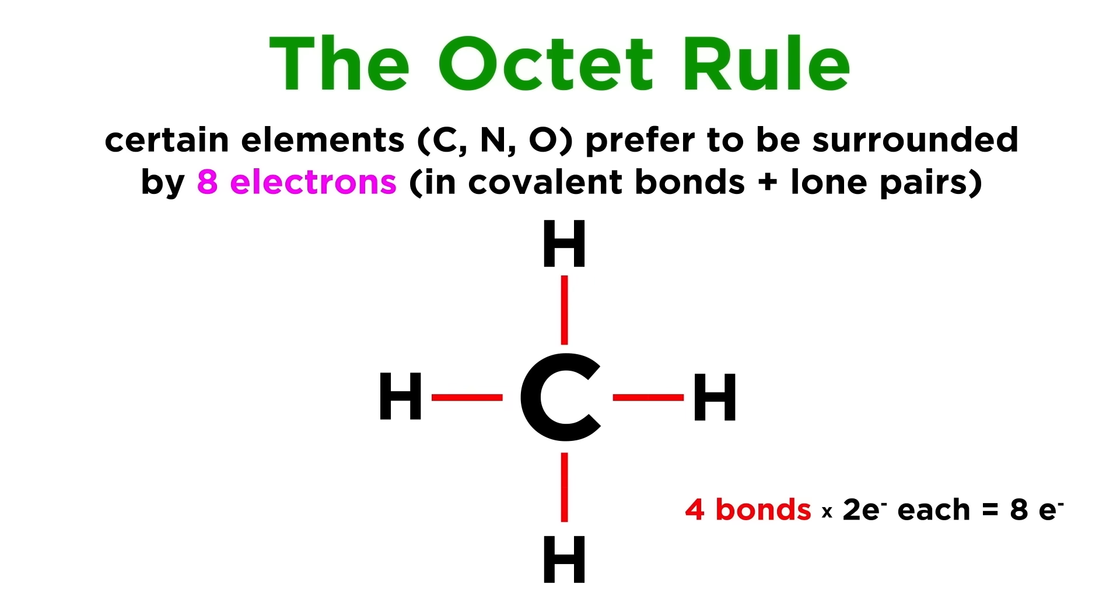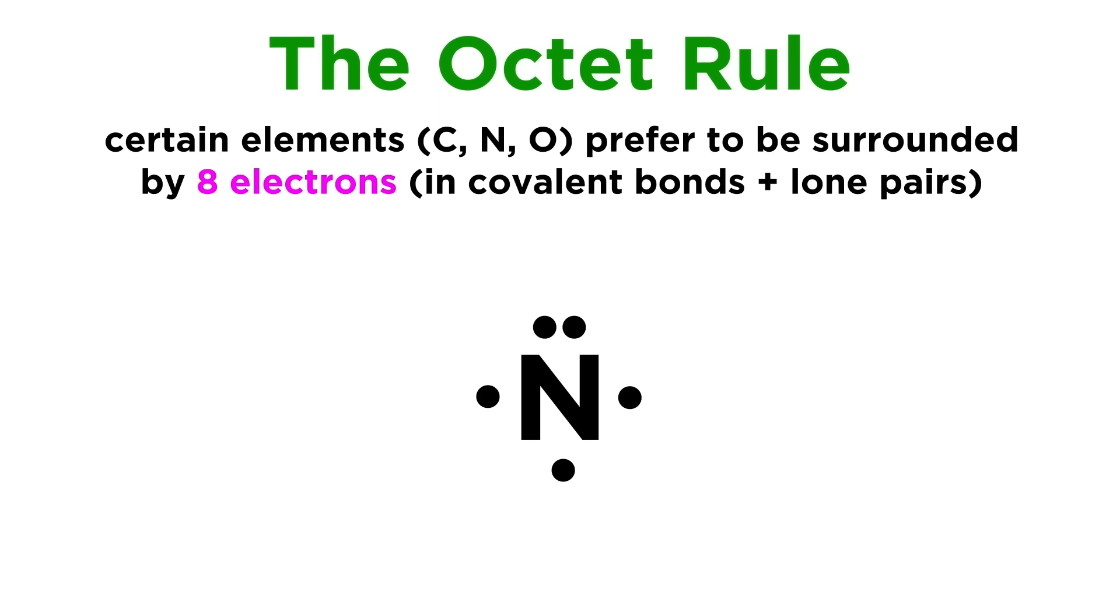Each covalent bond has two electrons in it, so carbon is surrounded by eight electrons. Nitrogen, with one lone pair and three electrons, will only need three bonds to fill its octet, since one of its coordination sites already has a pair of electrons. Three bonds plus the two electrons in the lone pair equals eight.